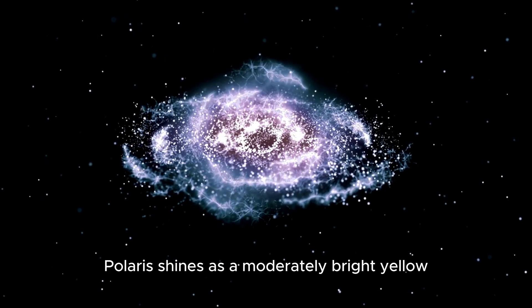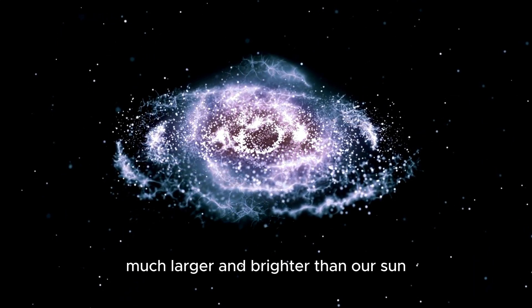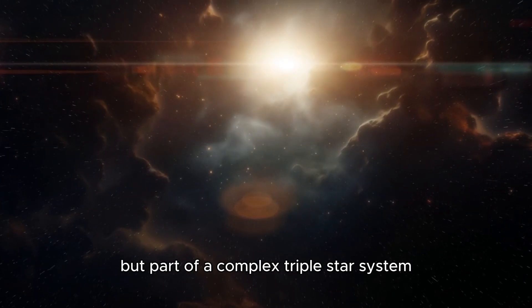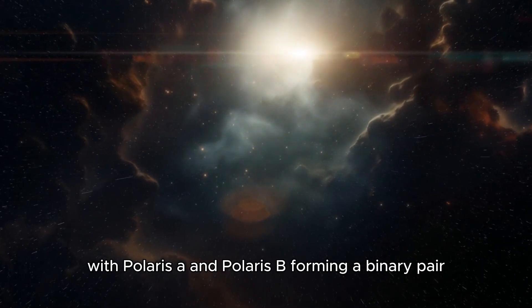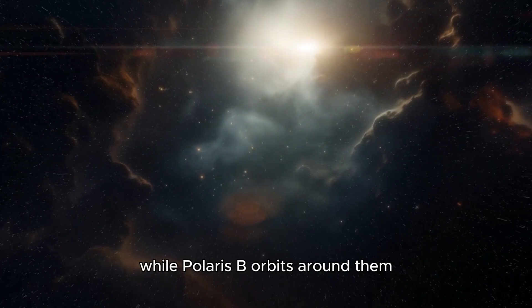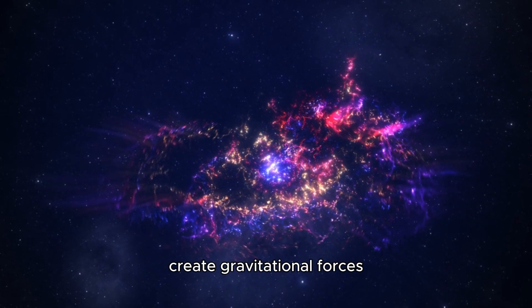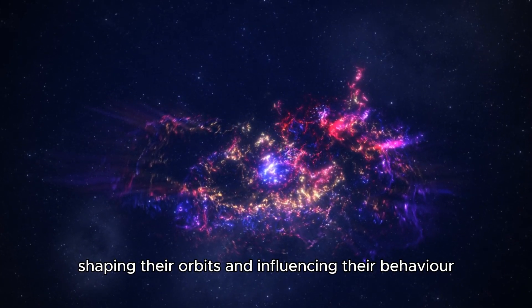Polaris shines as a moderately bright, yellow-white supergiant star, much larger and brighter than our Sun. It's not a solitary star, but part of a complex triple star system, with Polaris A and Polaris B forming a binary pair, while Polaris B orbits around them. The interactions among these stars create gravitational forces, shaping their orbits and influencing their behavior.